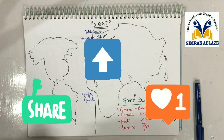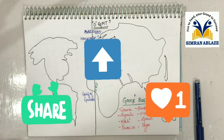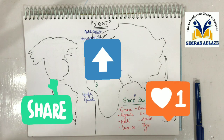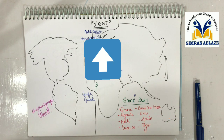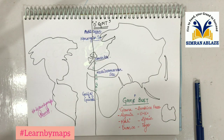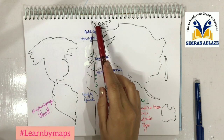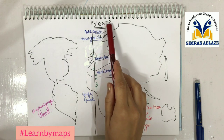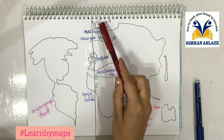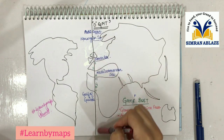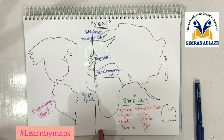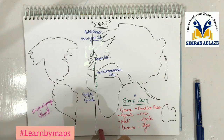Hello guys, welcome back to the channel. Today we are going to do a topic related to your atlas, and we will learn about GMT — that is Greenwich Meridian Time — and which countries and oceans cross the Prime Meridian. It's a very simple topic.